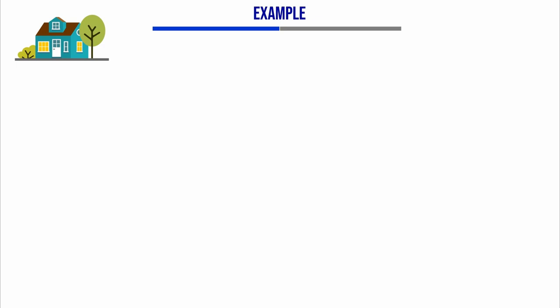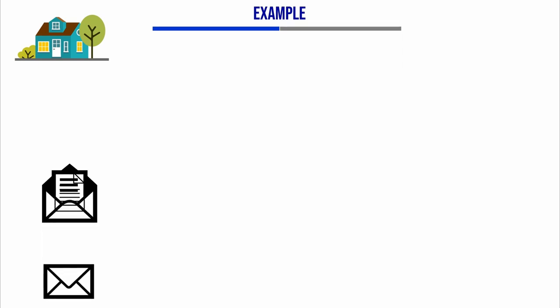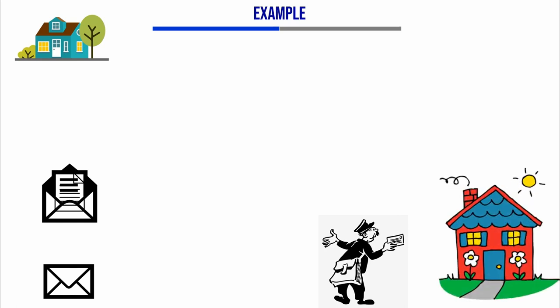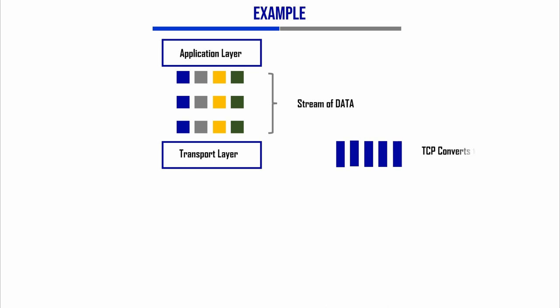You can think of a header like an envelope — just like an envelope containing information such as the sender and receiver address and the postage information. Similarly, TCP contains information such as source and destination port. Additionally, just like an envelope ensures the letter is delivered to the correct recipient, when we have data coming from the application layer, each segment will have bytes in it.